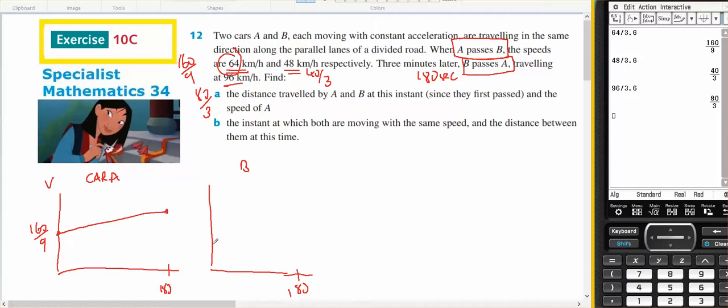Car B started traveling at 48, so that's 40 on 3, and it caught up, so it must have been traveling faster than Car A at 180. But what I do know, was at time 0, they're at the same place, and at time 180, they're at the same place, so those areas are the same.